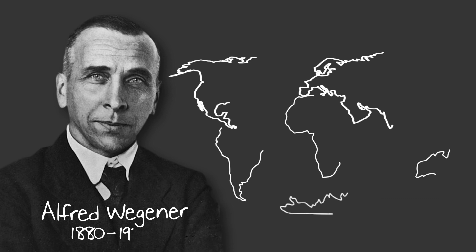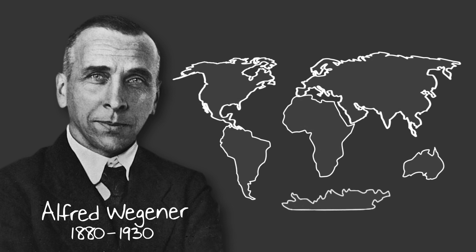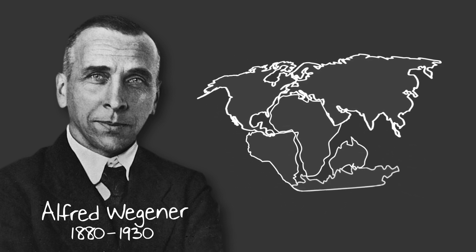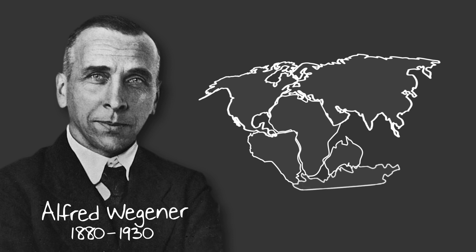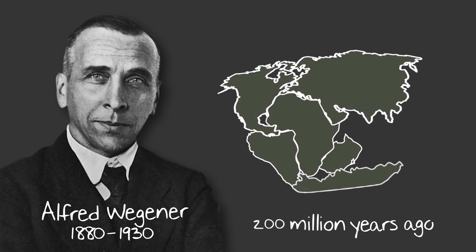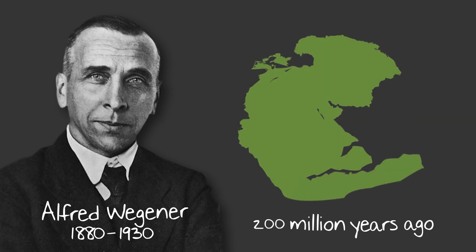In the early 1900s, a scientist named Alfred Wegener noticed that the coastlines of several continents looked like they fit together, similar to puzzle pieces. He believed that around 200 million years ago, all of the continents were joined together in one large supercontinent that he called Pangaea, which is Greek for all the Earth.